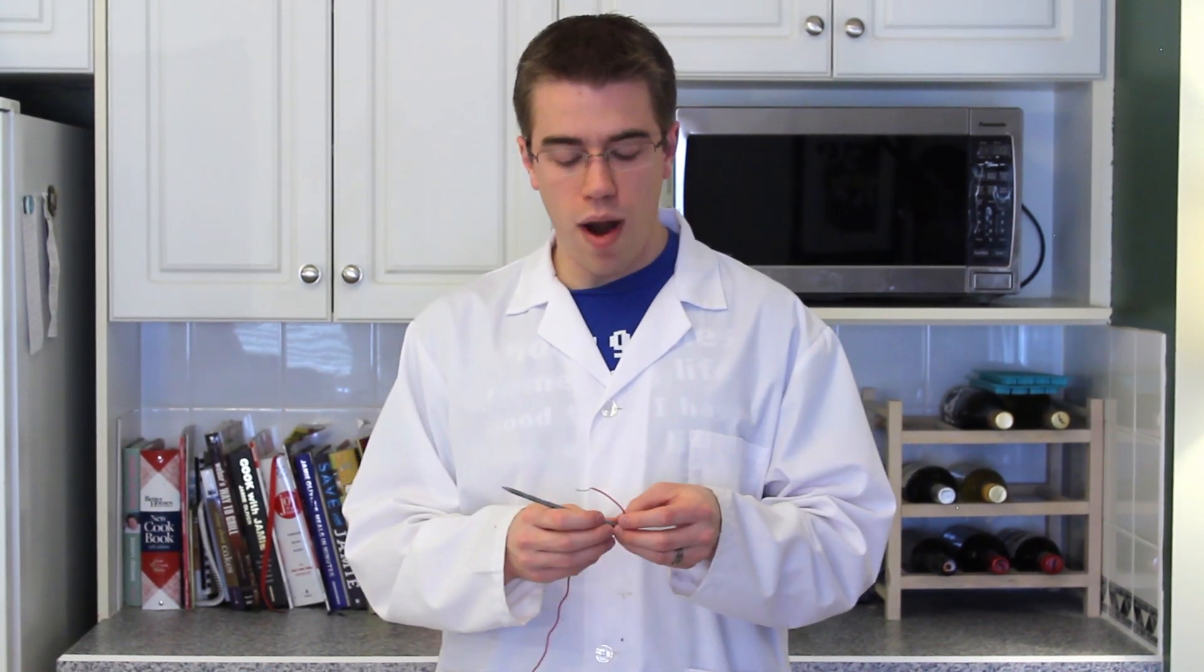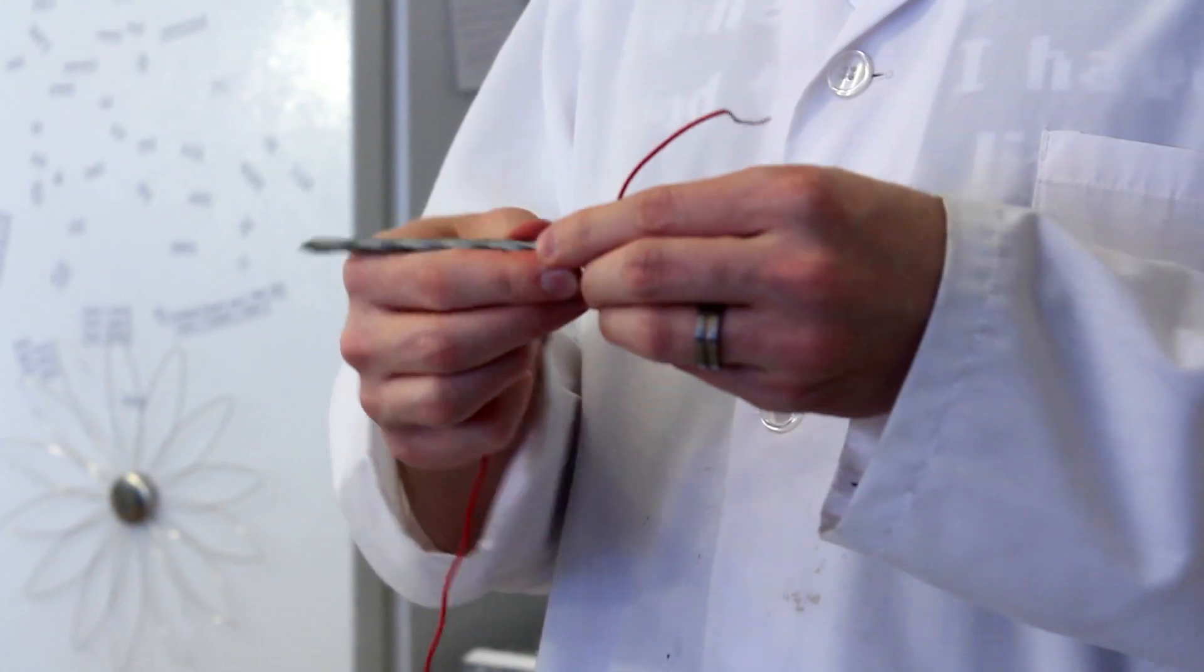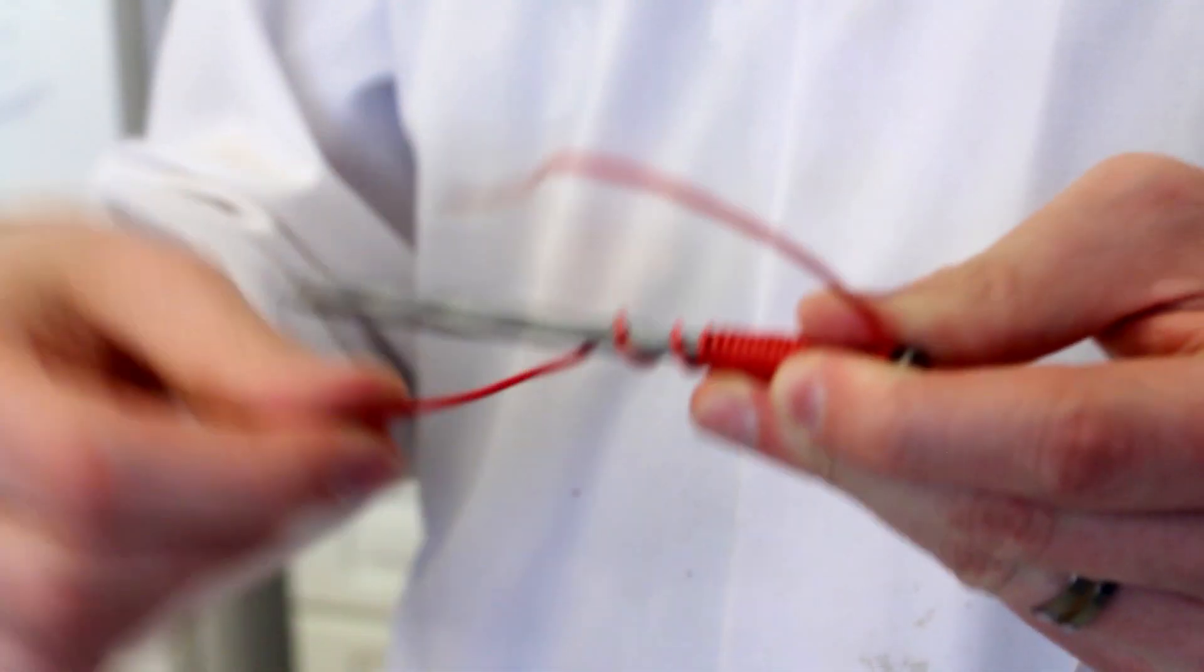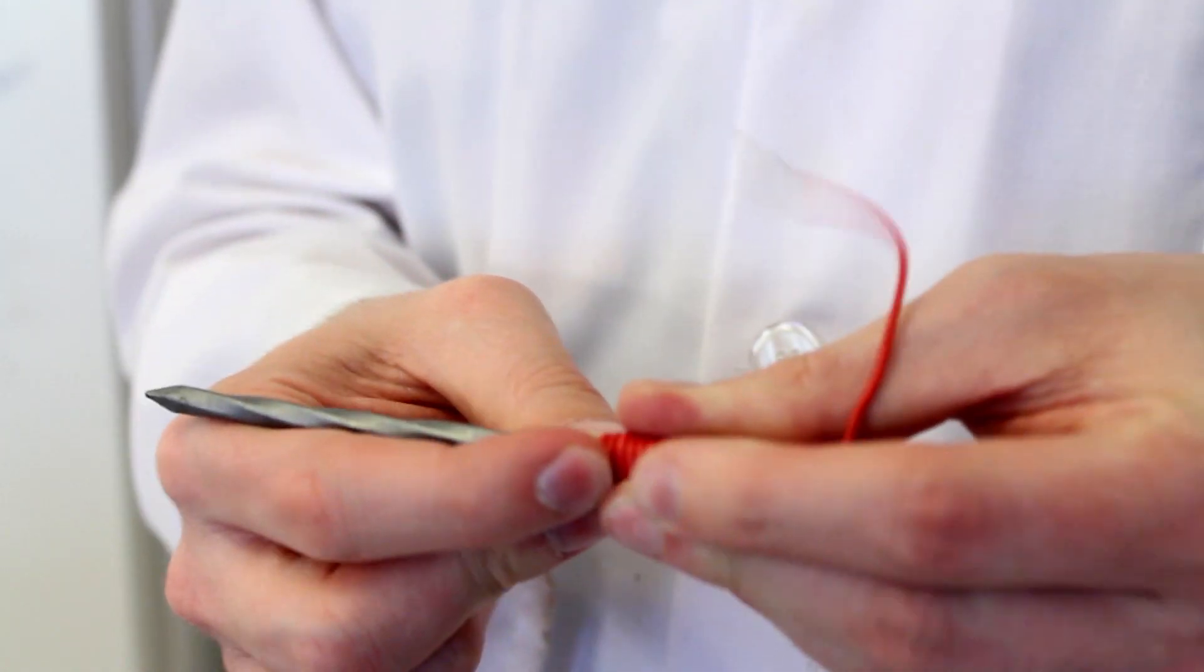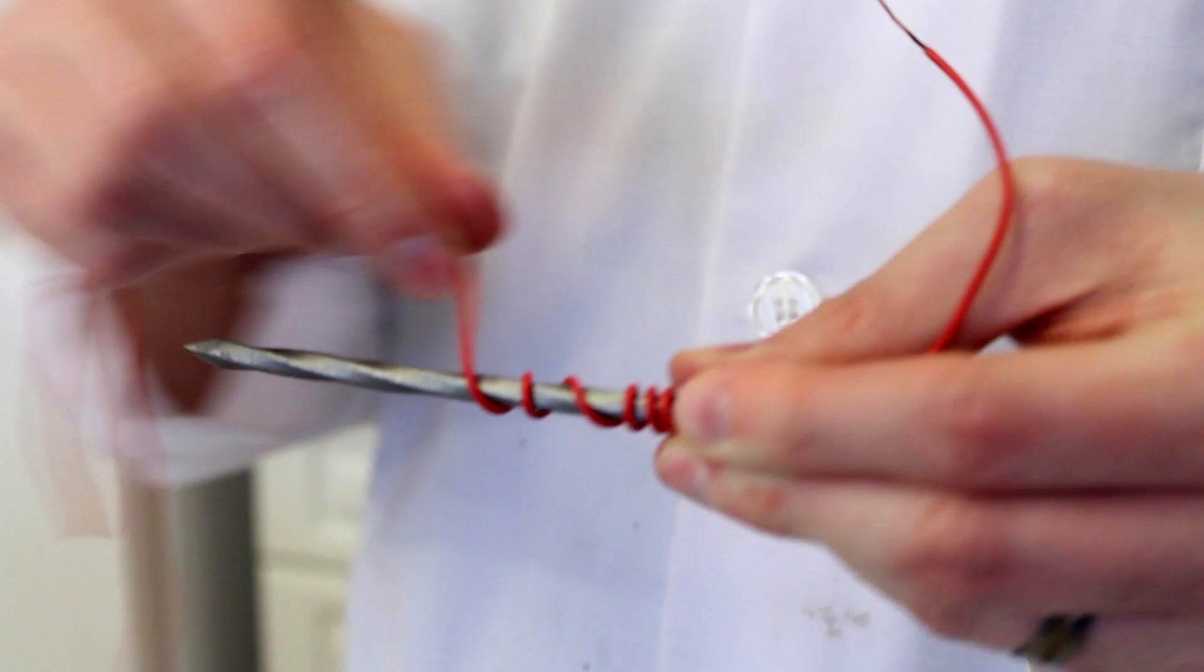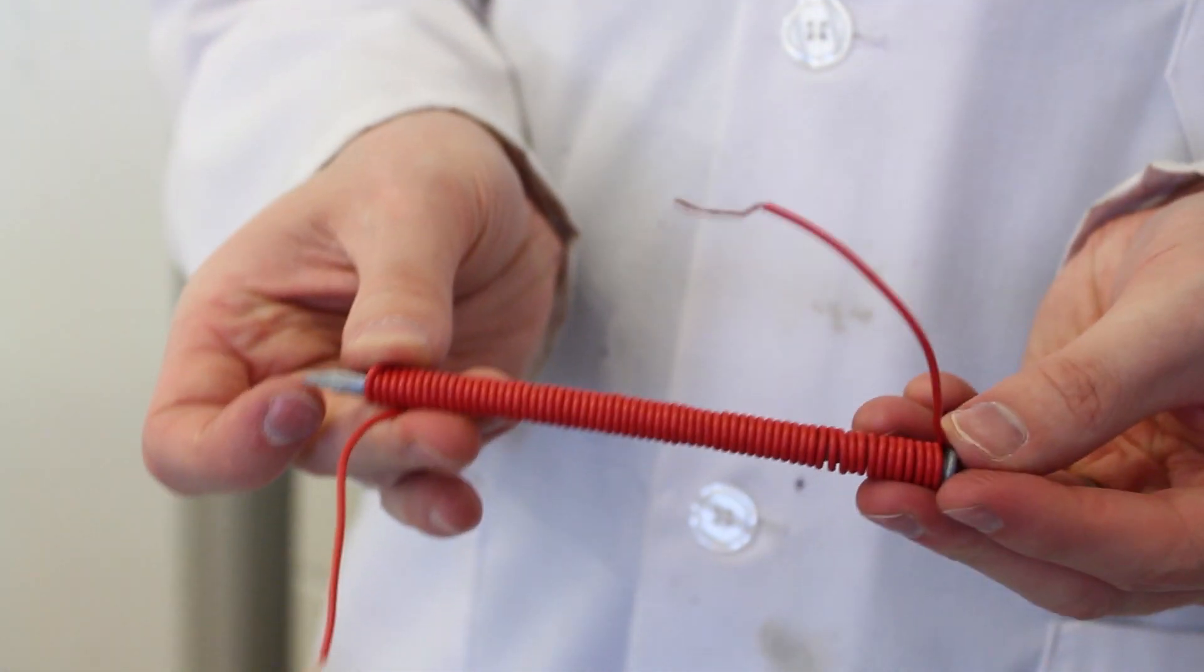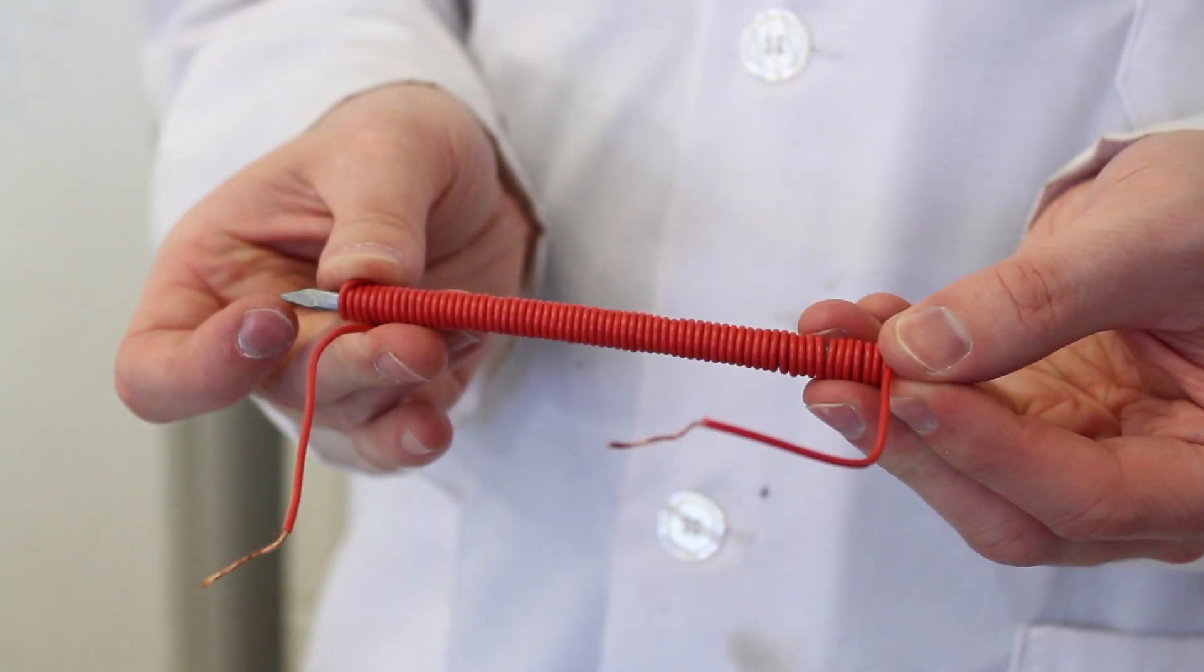The first step in our experiment is to take your nail and your length of wire and begin wrapping your length of wire around your nail. Now you want to leave a little bit of a tail at the end to act as a lead. Also, you don't want to cross the wire over itself. You want to make sure it's a continuous tight spiral around the nail. Continue wrapping the wire around the nail until you have the entire nail covered in wire.